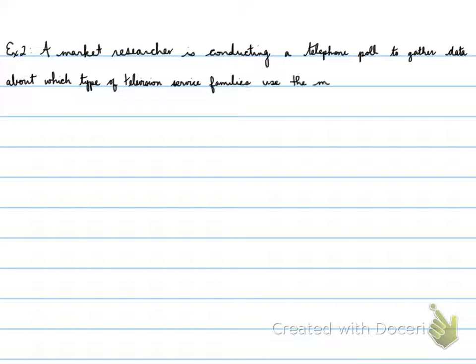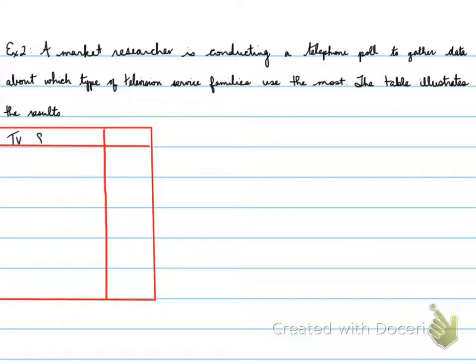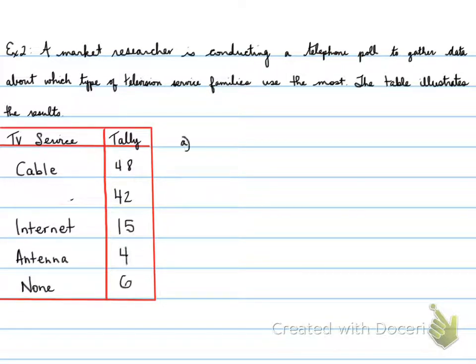Example two. A market researcher is conducting a telephone poll to gather data about which type of television service families use the most. The table illustrates the results. TV service, tally, and the different types are cable, satellite, internet, antenna, and none. Here's the values. Just a quick correction to the word satellite—there is a spelling error.